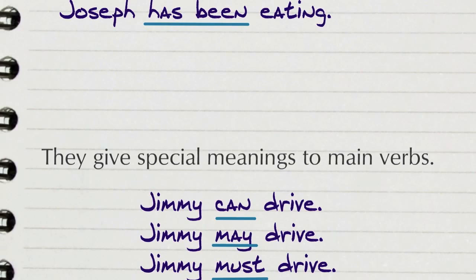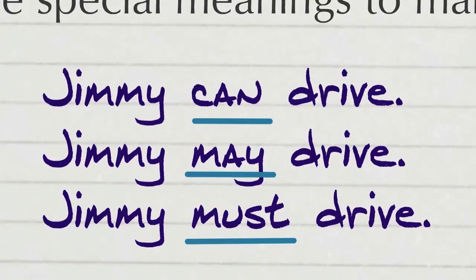Helping verbs also give special significance to the main verb. Helping verbs that do this are called modals. Here are some examples of modal helping verbs: 'Jimmy can drive,' 'Jimmy may drive.' Drive is always the main verb, but the modals give special meaning to it in each sentence. Can, may, and must help and change our knowledge of the main verb drive.